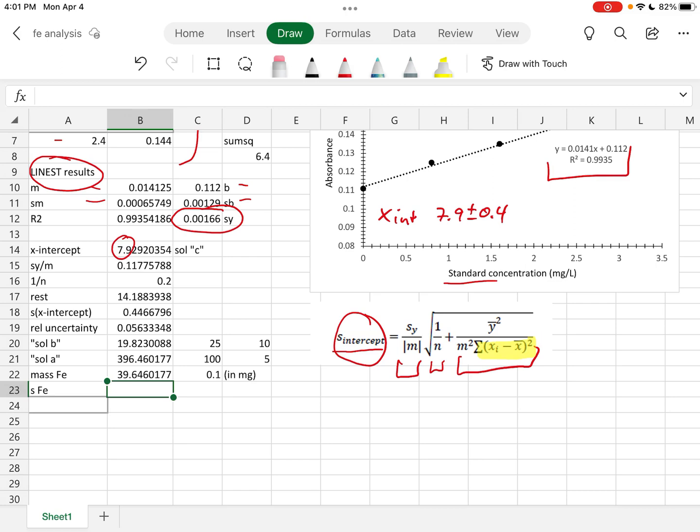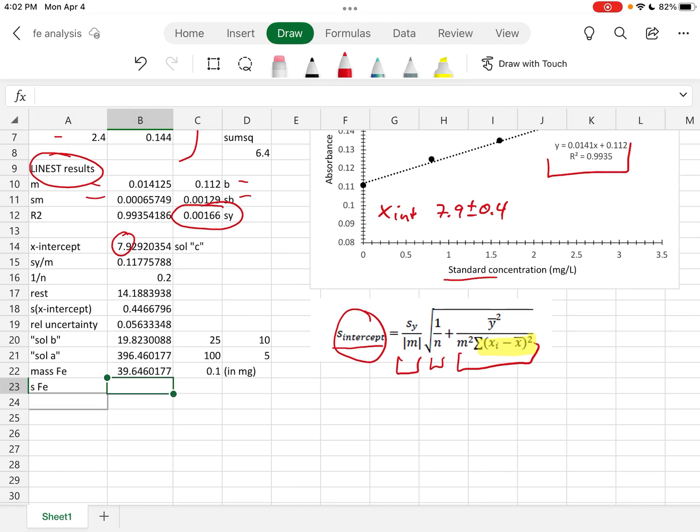So what that means, if we had the s for the x-intercept divided by the x-intercept is equal to some value, that is going to be equal to the s in iron divided by the mass of iron that we've got. So since I've just calculated this value and this value and this value, I multiply those two together to get the uncertainty in my final result.